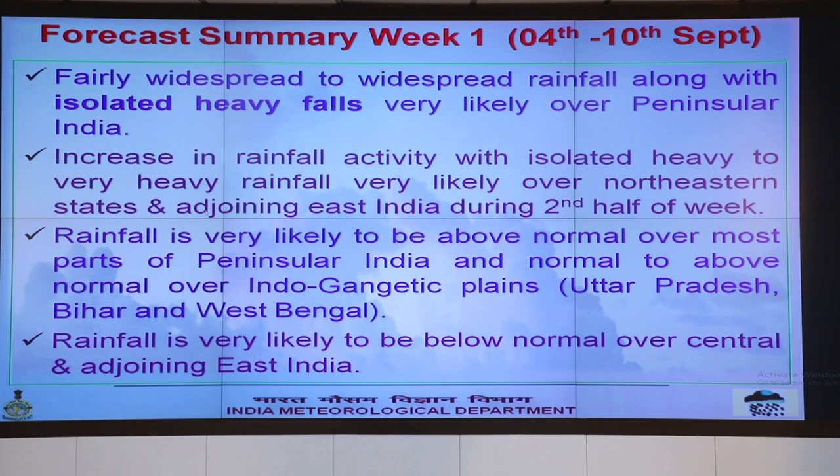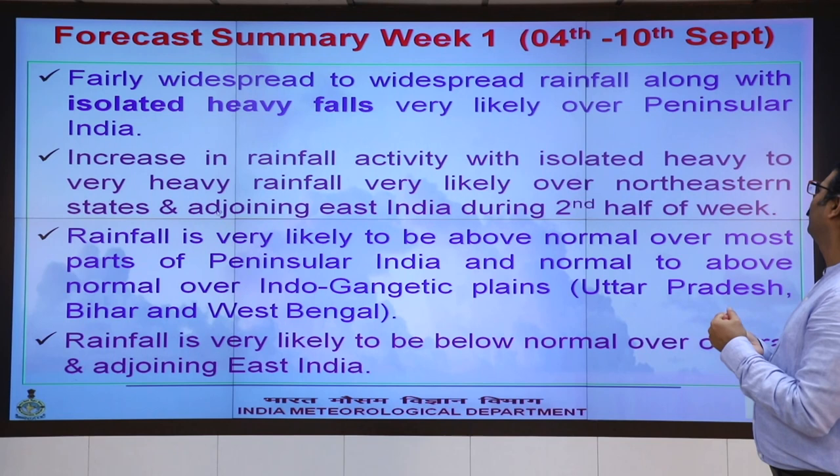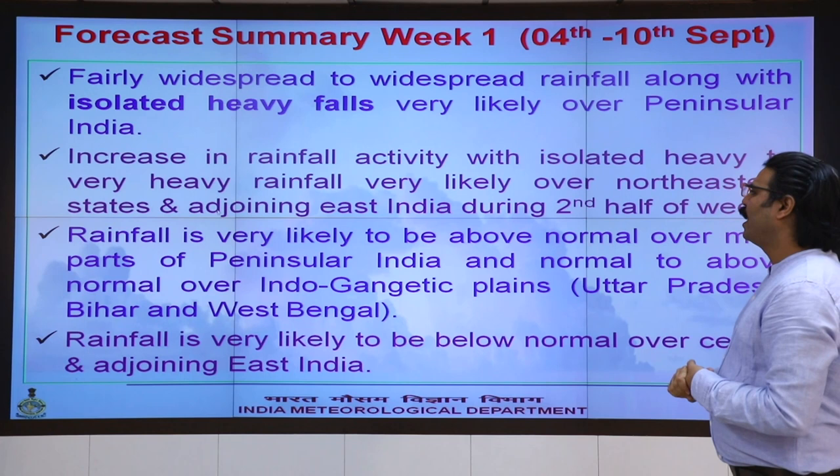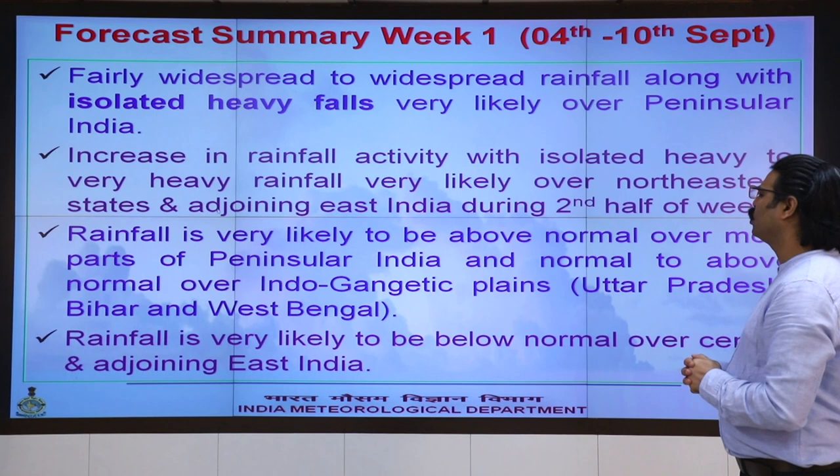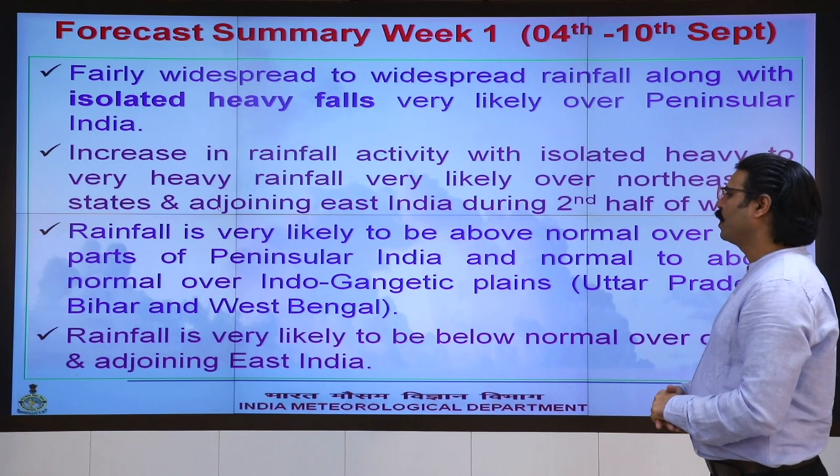The forecast summary for week 1 (4th to 10th September): fairly widespread to widespread rainfall with isolated heavy falls is very likely over peninsular India. Increased rainfall activity with isolated heavy to very heavy falls is very likely over the northeastern states and adjoining east India during the second half of this week.